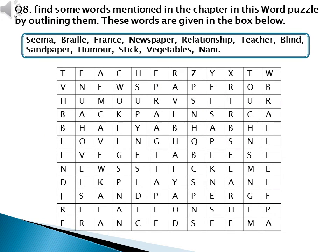Question number eight: find some words mentioned in the chapter in this word puzzle by outlining them. The words given in the box are: Seema, braille, France, newspaper, relationship, teacher, blind, sandpaper, humor, streak, vegetables, and nani. You need to search for these words in the grid and circle them.